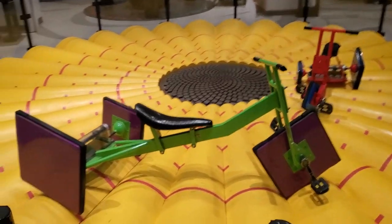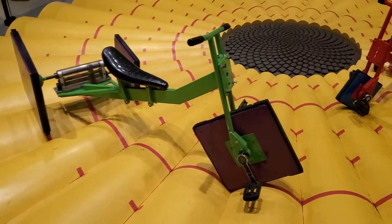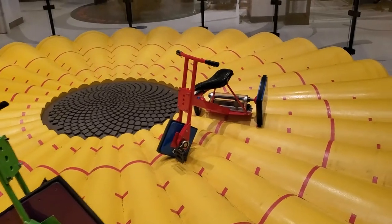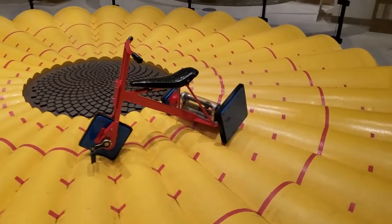When you walk into the museum, the first exhibit you see is this one. At the center of the room, there are two tricycles sitting on top of a weird bumpy platform.